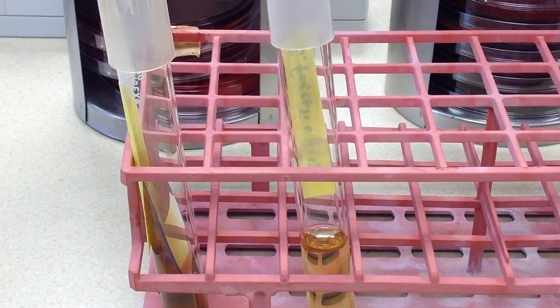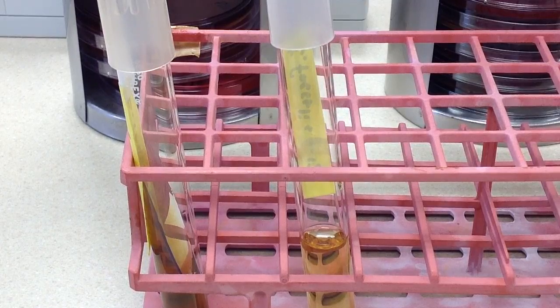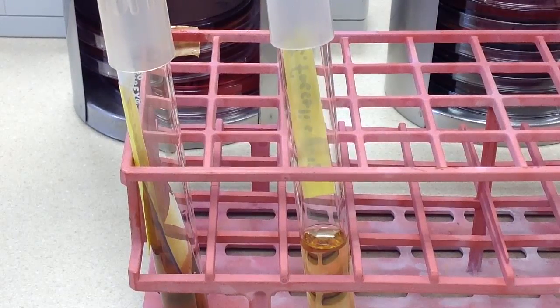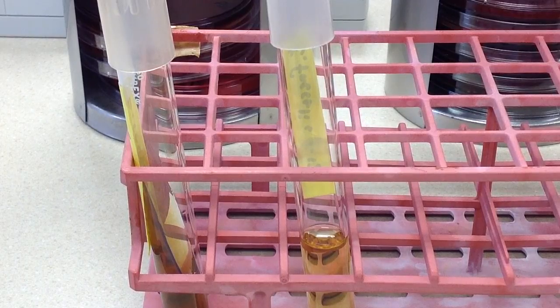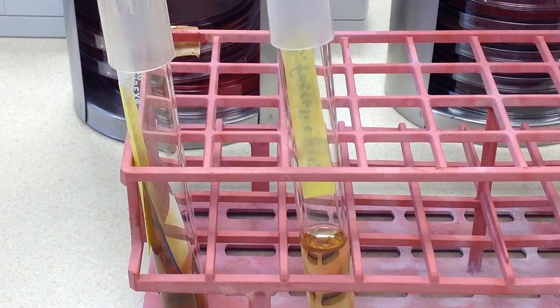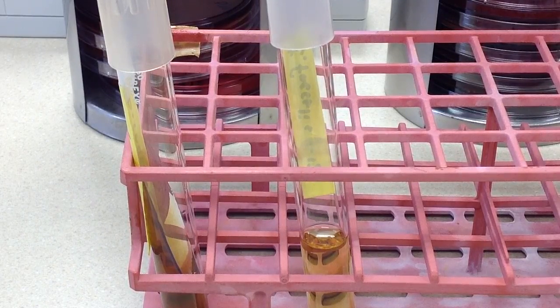In this video we are going to take a look at inoculating a broth, in this case the 6.5% sodium chloride broth for the identification of Enterococcus, and then we are also going to inoculate the slant bile esculin, which is also for the identification of Enterococcus.